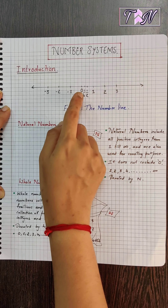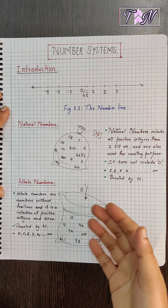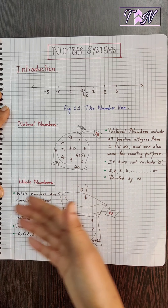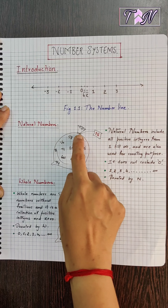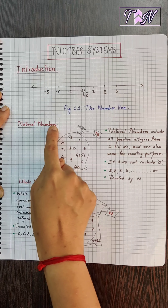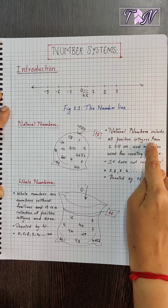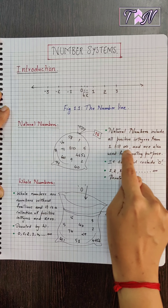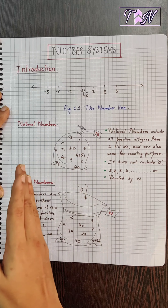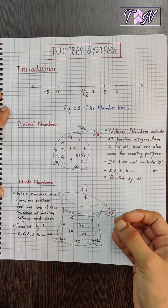Imagine you start walking from point 0 moving towards the positive direction. You take a bag and start collecting the counting numbers: 1, 2, 3, and so on — the list goes on — and you put them in a bag. This collection is tagged as N. The natural numbers are defined as all positive integers from 1 till infinity, and are also used for counting purposes. So these are positive integers starting from 1 till infinity.